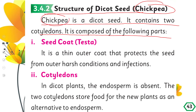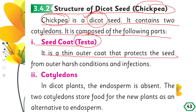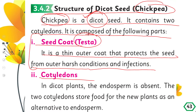A chickpea contains two cotyledons — that is why it is called a dicot seed. Let's look at its internal structure. On top is the seed coat, which is called the testa. It is a thin outer coat that protects the seed from outer harsh conditions and infections.